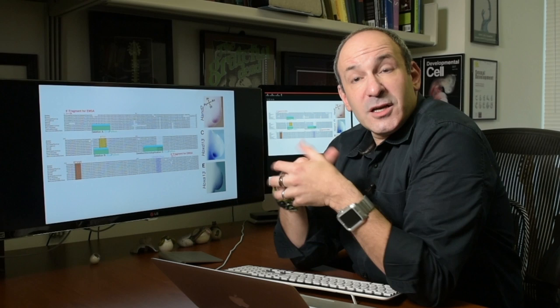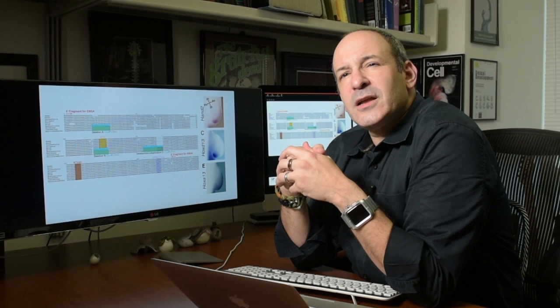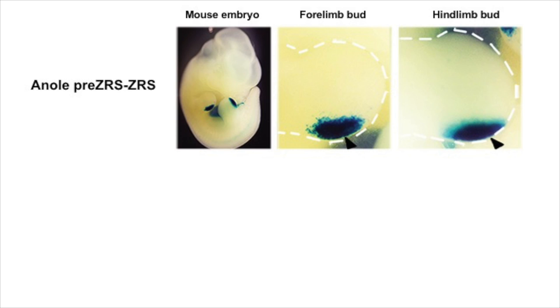And we did some biochemistry and found that these are indeed binding sites for HOX proteins, and when they're deleted, the HOX proteins can't bind. And we suspected that that might underlie the failure to activate the ZRS and ultimately to drive transcription of sonic hedgehog in the limb.